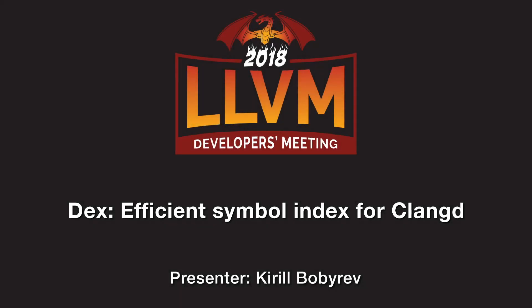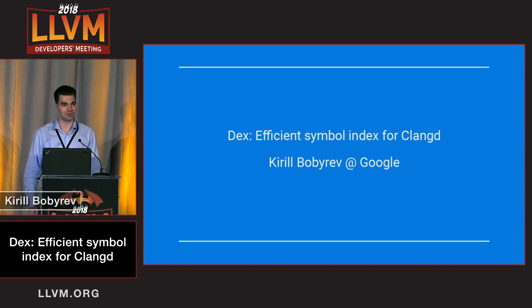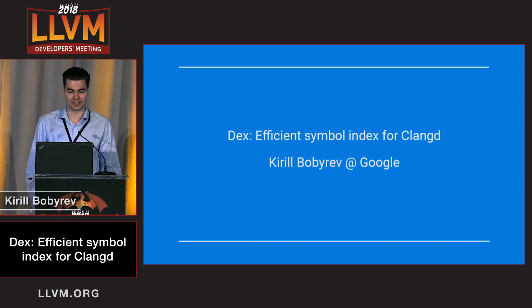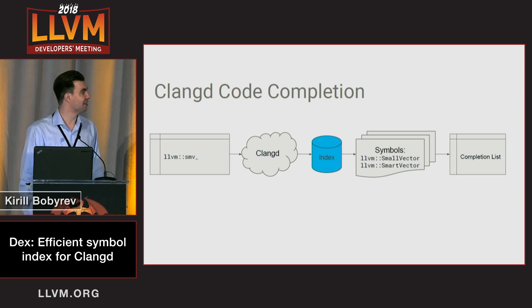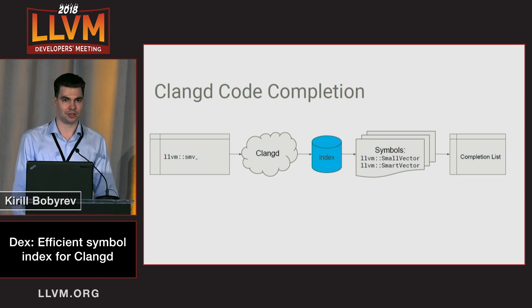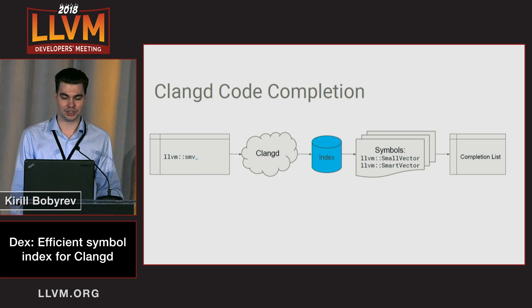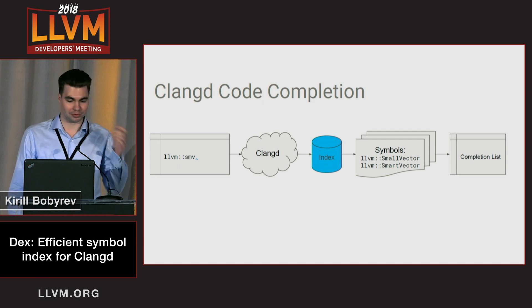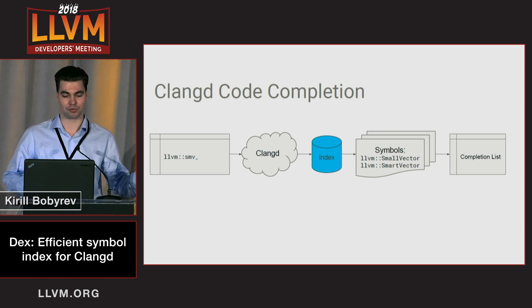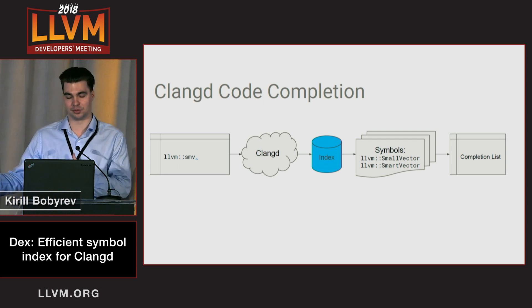Hi everyone, my name is Kirill Bobarev and this summer I worked on an efficient symbol index for Clang-D at Google. Clang-D is our language server protocol implementation that provides smart IDE features like code completion, and one of the focuses of our team was to improve the speed and quality of code completion for global symbols.